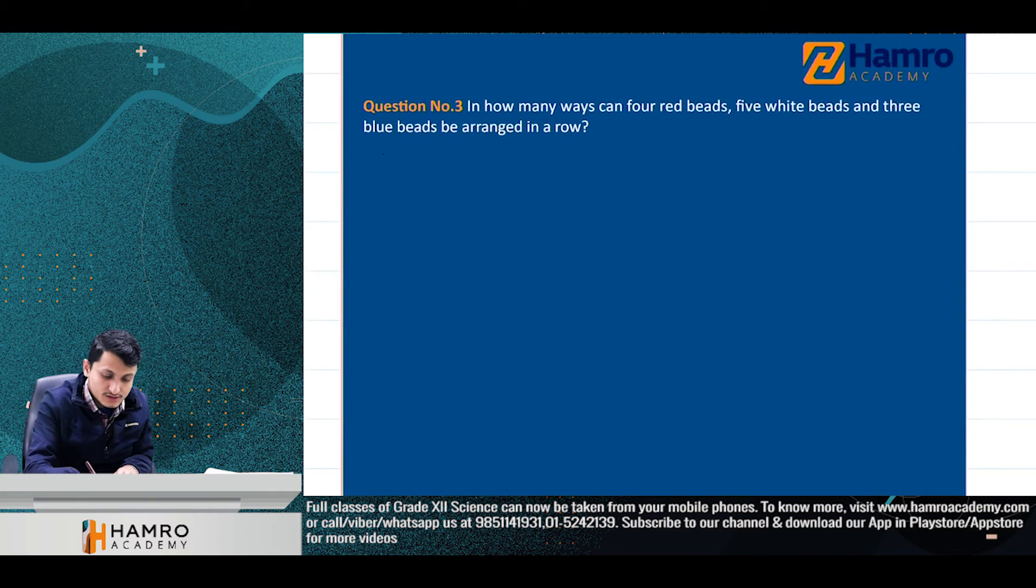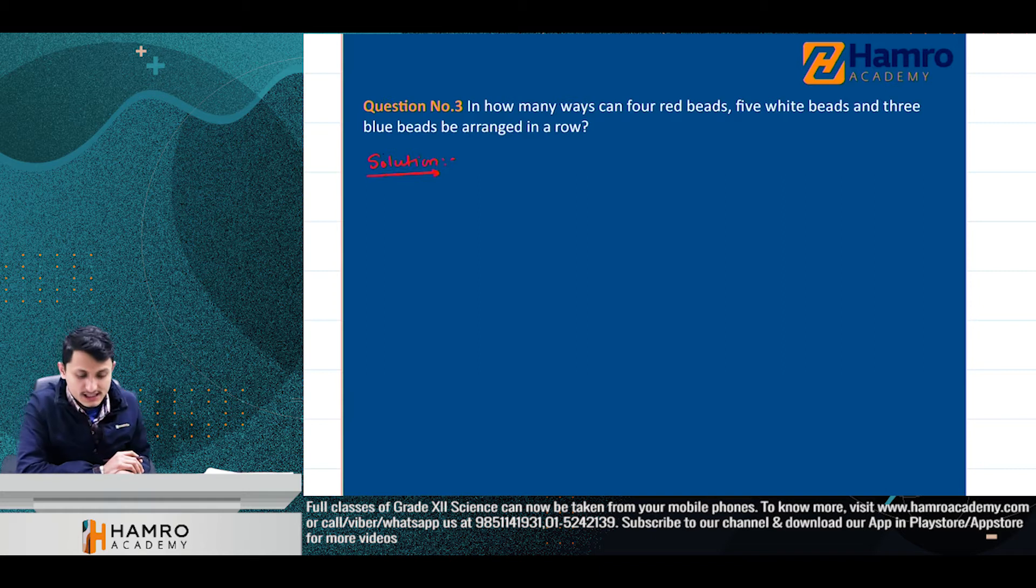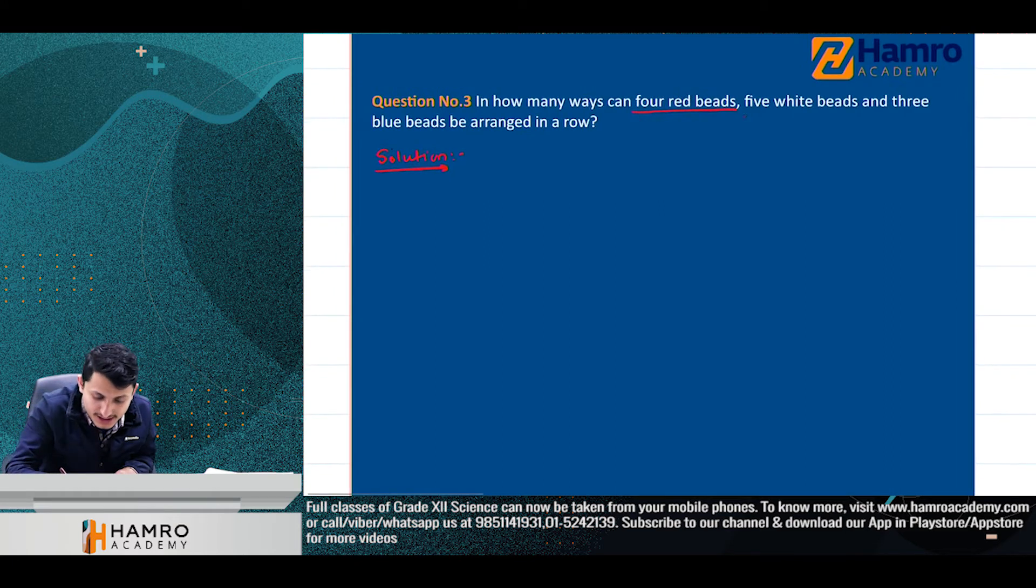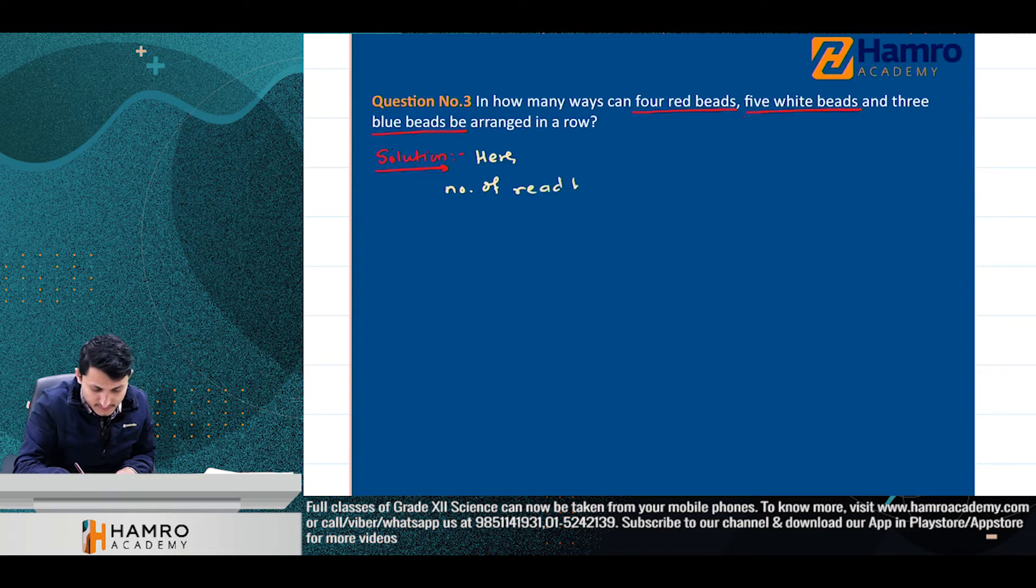Let's go to the solution now. It's given: In how many ways can four red beers, five white beers, and three blue beers be arranged in a row? In how many ways can these beers be arranged in a row?